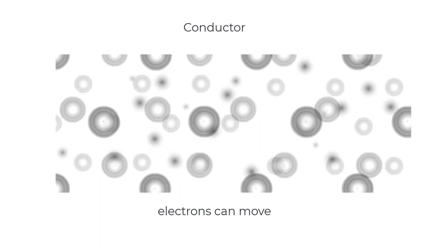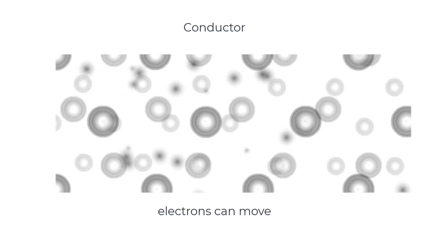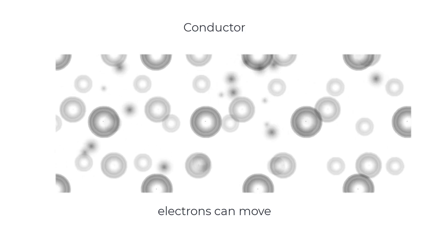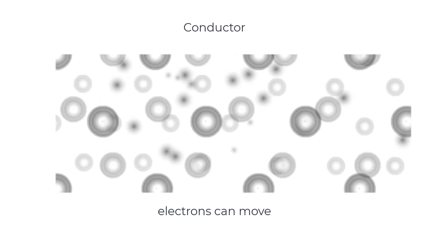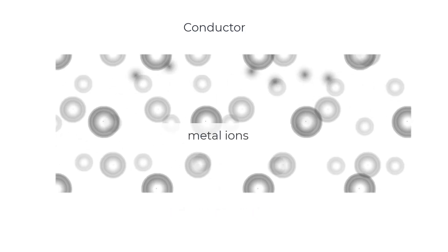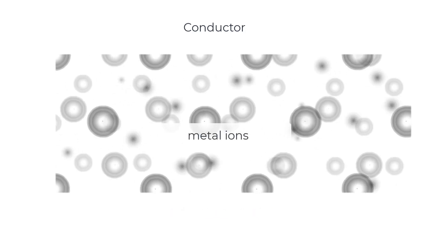Conductors like metals have free electrons that can move when they're part of a circuit. In this animation, the little grey smudges represent electrons moving through the vibrating lattice of positive metal ions, which are the big round circles.